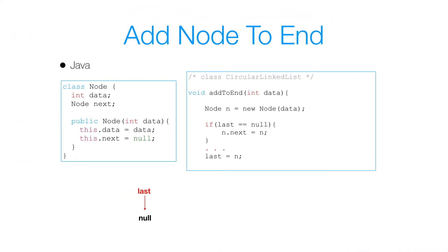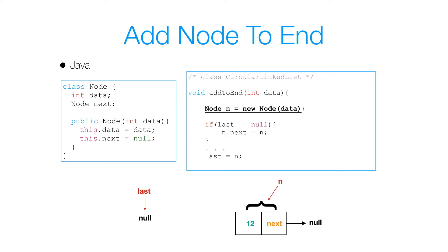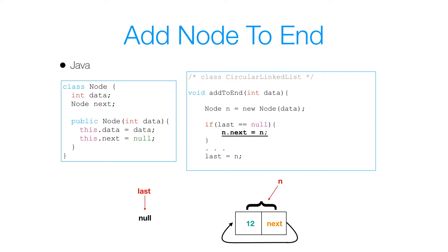Now suppose I want to add a node to the end of a list but we don't know if that list is null or has some existing nodes. If our list is null, we first create the node we want to add. We check if our last is equal to null — and since it is, we set n.next to n because we want the last node to reference itself. Then we set last to n, and that's it.